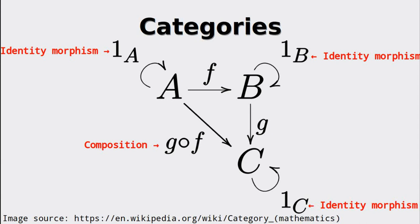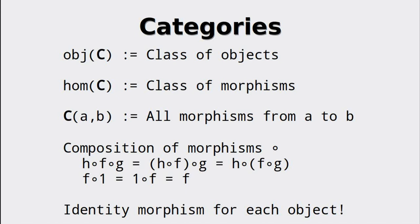Before we can talk about examples, we need to define some basic syntax. Given a category C, OBJ of C is the class of objects in C. Analogously, HOM of C is the class of morphisms or arrows in C. And C(A,B) denotes all morphisms going from the object A to the object B.